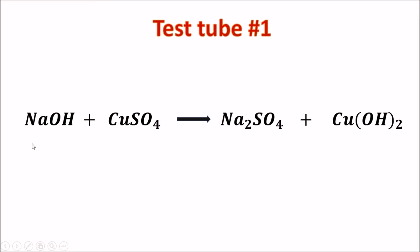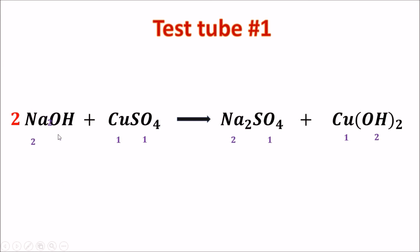This is not yet a balanced equation. Na has 1, hydroxide has 1, copper 1, sulfate 1 on the left side. On the right side, sodium is 2, sulfate is 1, copper 1, and hydroxide is 2. As we can see, sodium on the left is only 1 but on the right is 2. So we put coefficient 2, making sodium 2 and hydroxide 2 on the left. The equation is now balanced — this is the balanced equation for test tube number 1.